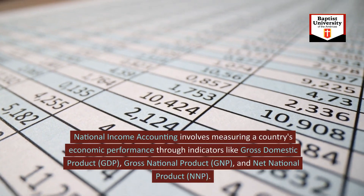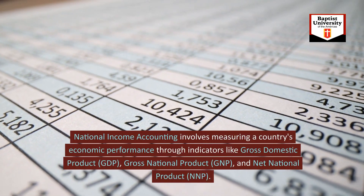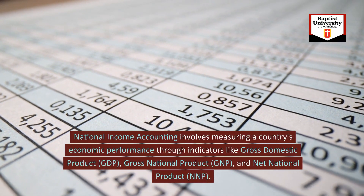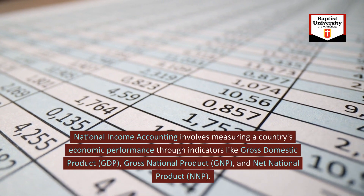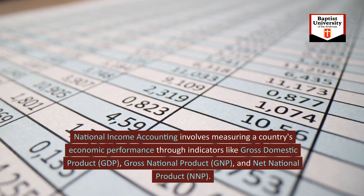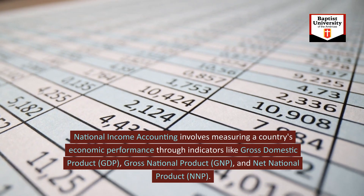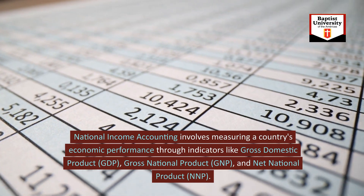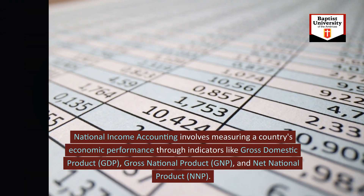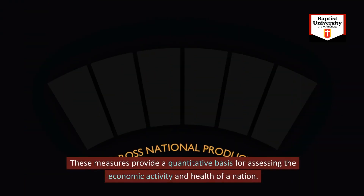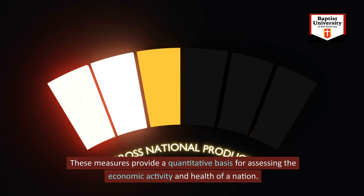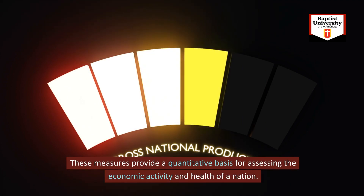National income accounting involves measuring a country's economic performance through indicators like gross domestic product (GDP), gross national product (GNP), and net national product (NNP). These measures provide a quantitative basis for assessing the economic activity and health of a nation.